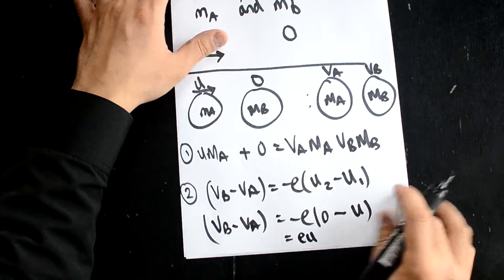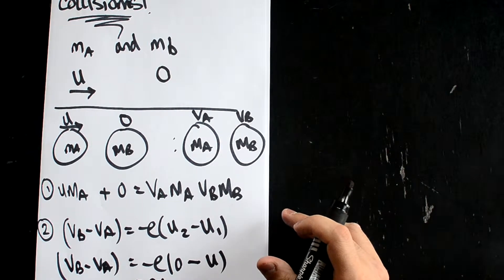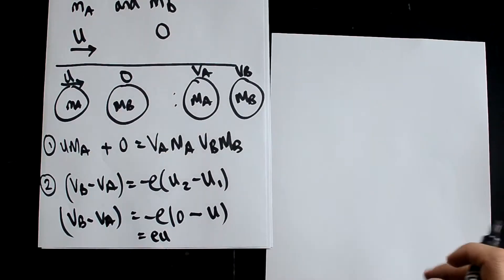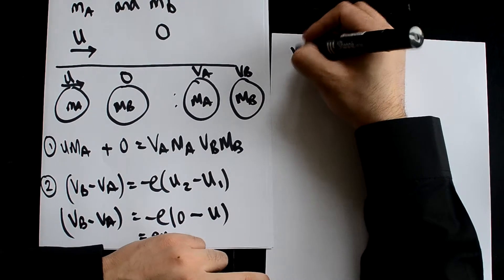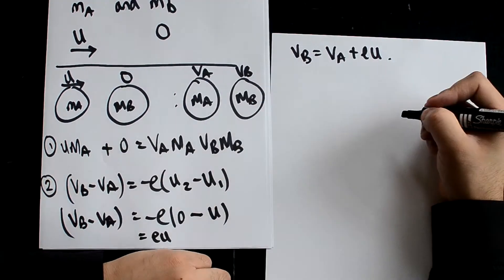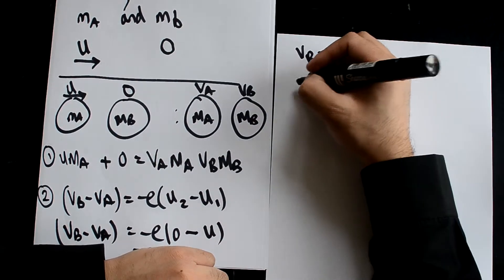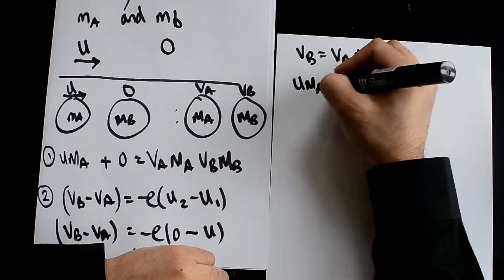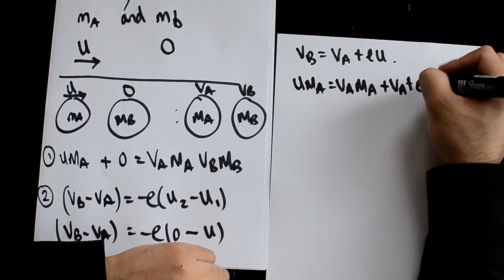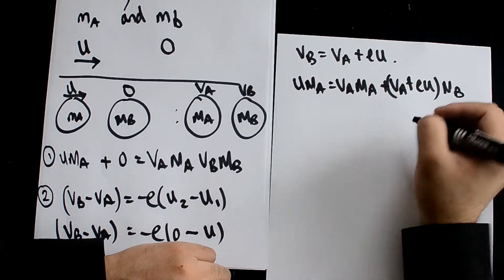Now we have two equations. We're going to rearrange this. So vb equals va plus eu. Now we've got this equation, so let's eliminate vb by substituting va plus eu. You're going to get u ma equals va ma plus (va plus eu) all multiplied by mb.